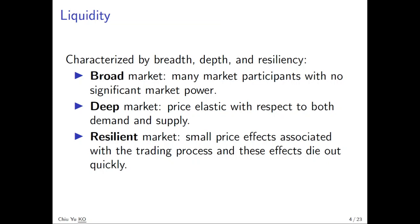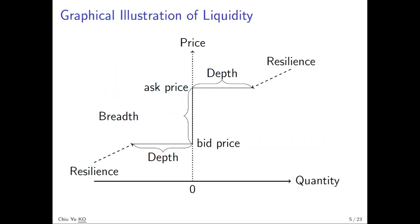So let's illustrate this in a nice graph. You can see this graph — the horizontal dimension is quantity and the vertical dimension is price, the standard from microeconomics. Financial markets are characterized by two different prices: the ask price and bid price, which is the buying price and selling price. The discrepancy between these two prices, called the bid-ask spread, is the breadth of the market. The quantity supporting the ask price and bid price is called the depth. And how fast this adjustment goes back to the original ask price and bid price is called resonance.